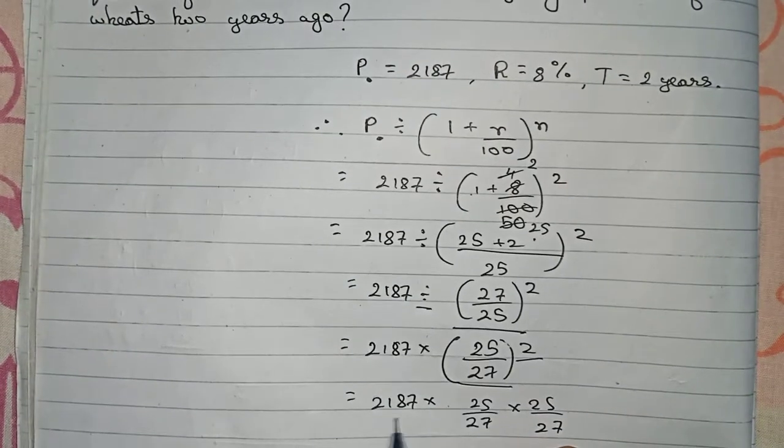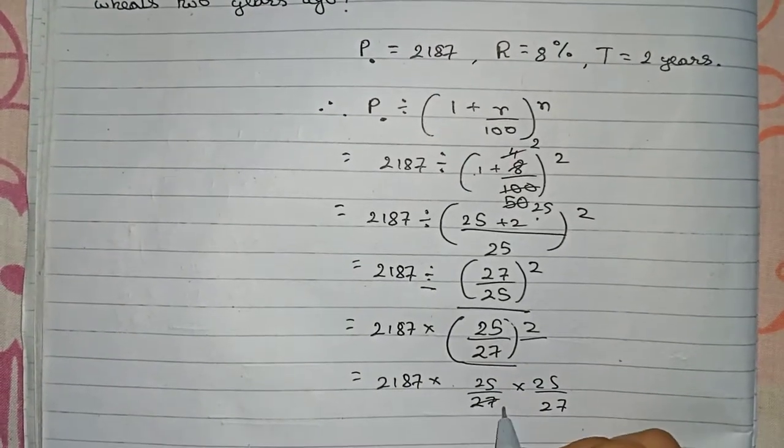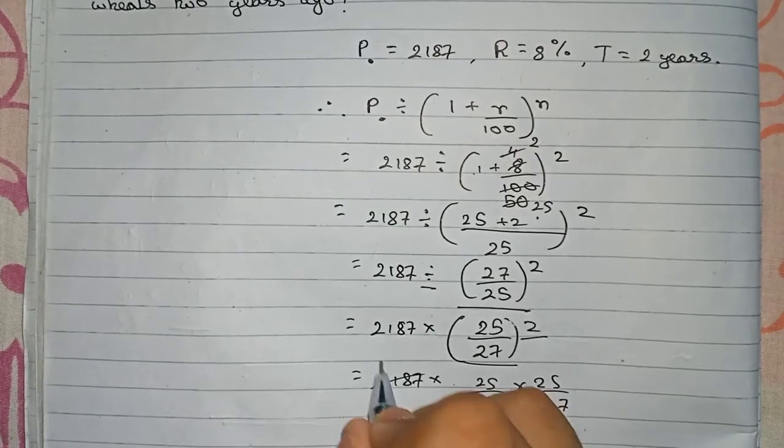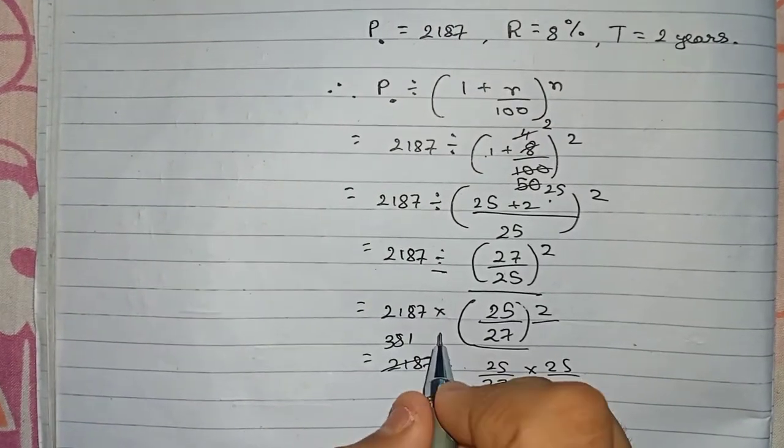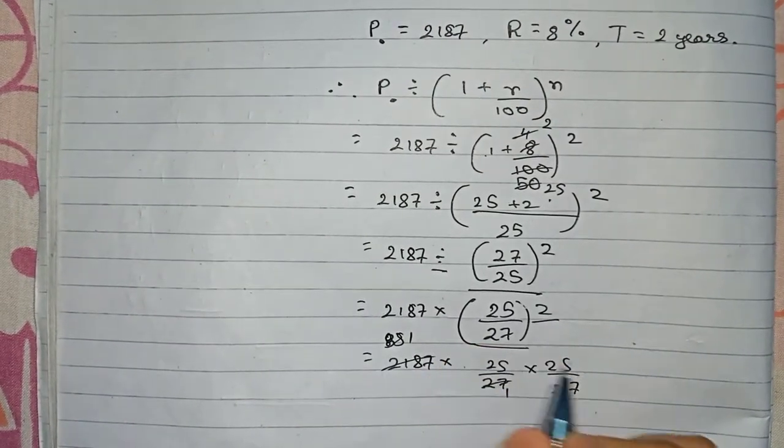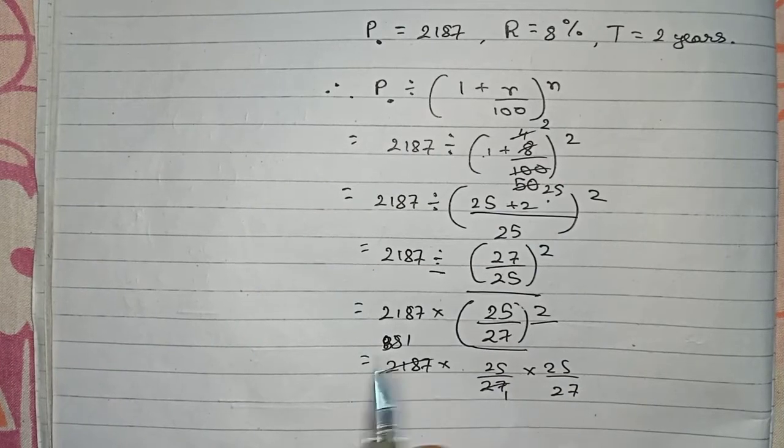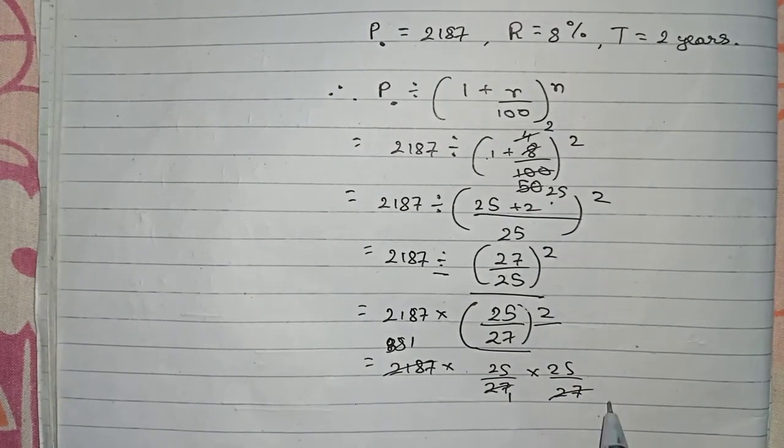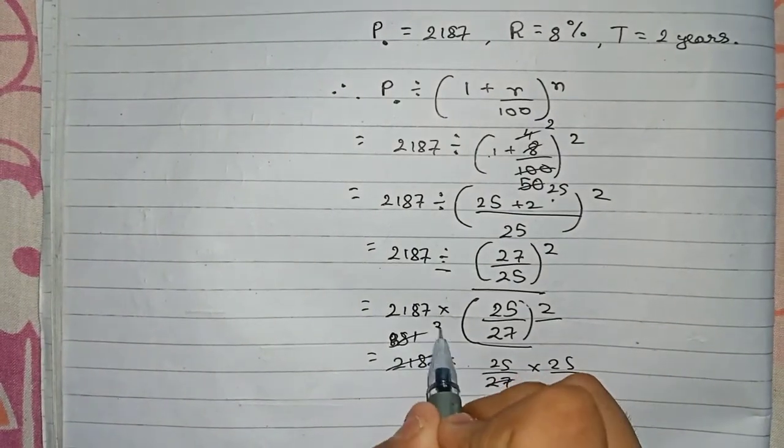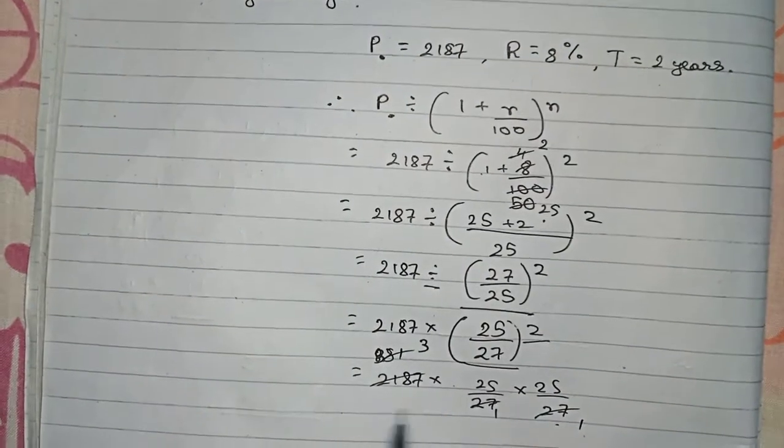So we can cancel 27 and 2187 directly. First, it will become 81. That means 2187 divided by 27 is 81. And here, if we cut it again, it will become 3. That means 81 divided by 27 is 3.